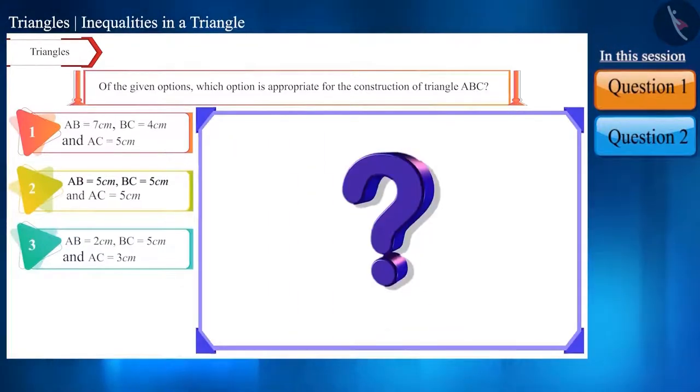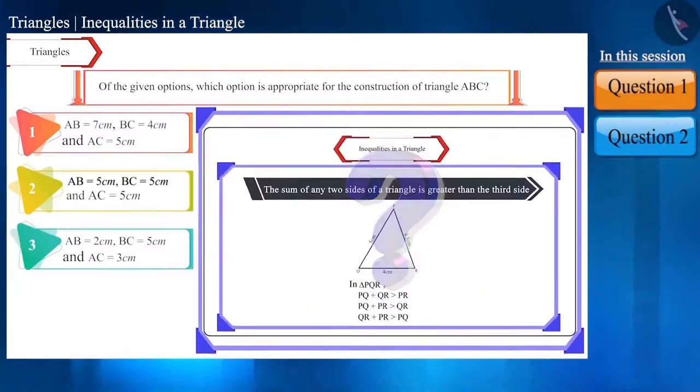How to solve this type of question? We know that for the construction of a triangle, the sum of its any two sides must be greater than the third side. So we have to check whether the given options agree with this rule or not.